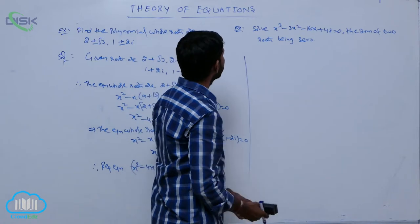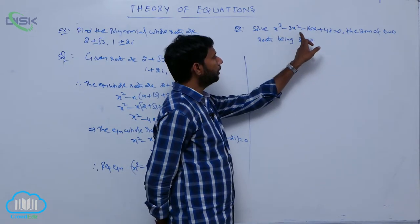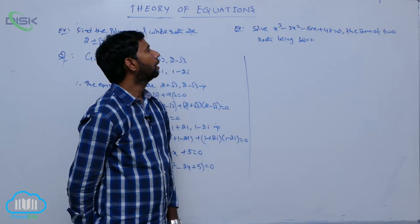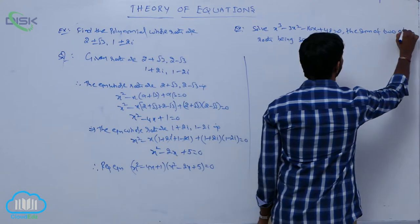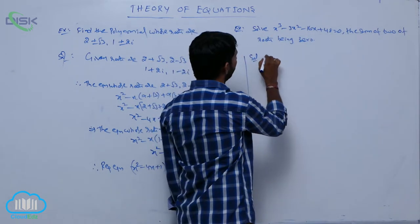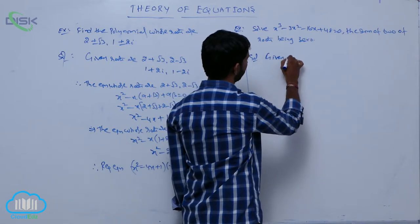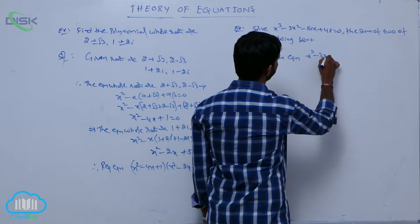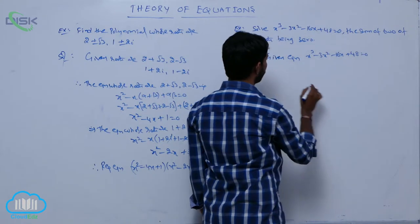And the next problem: solve the equation x cubed minus 3x squared minus 16x plus 48 equals 0, given that the sum of two of its roots is 0.